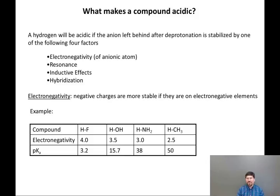The most basic principle you need to take away is that a hydrogen will be more acidic if the anion left behind after deprotonation is stabilized by one of the following four factors: electronegativity of the anionic atom, resonance, inductive effects, or hybridization of the anionic atom, assuming it is a carbon. We'll look at each of these factors in order.